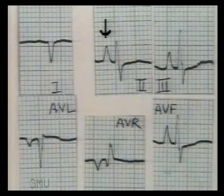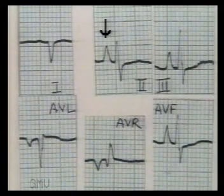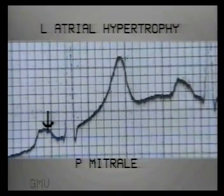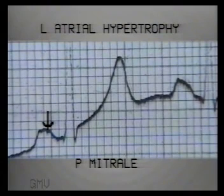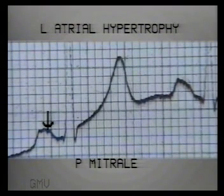This ECG shows tall and peaked P waves in leads 2, 3, and AVF — this is typical P pulmonale. This next example is P mitrale: no notch, but 2.5 small squares wide, suggesting left atrial hypertrophy.